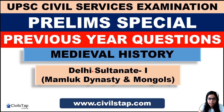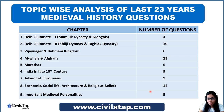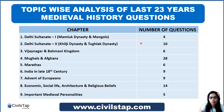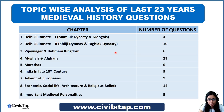Today we are starting the first topic: Delhi Sultanate, which we have divided into two parts. The first part covers the Mamluk dynasty and Mongols. I have provided a topic listing on your screen. Today's first topic has 4 questions from the last 23 years. The religion part and Sufism topic have already been covered in Art and Culture, so we won't repeat them here.